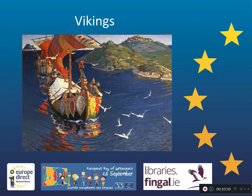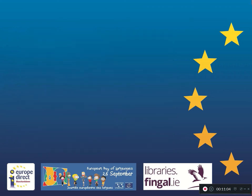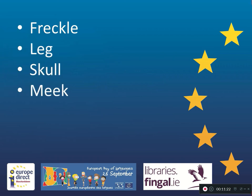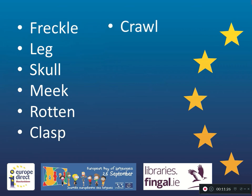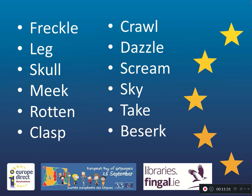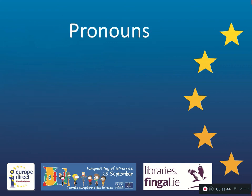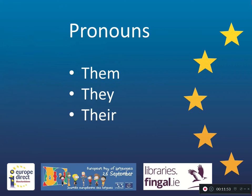Who were the next group of people to influence the English language? It was the Vikings, and they invaded Britain in the 700s and also came to Ireland. The language the Vikings spoke was also a Germanic language, and it's likely that the Vikings and the Anglo-Saxon inhabitants of England would have been able to understand each other to a certain extent. That said, they did give us some specific words: freckle, leg, skull, meek, rotten, clasp, crawl, dazzle, scream, sky, take and berserk — a berserker being a particularly ferocious type of Viking warrior. The Norse also gave us several of our pronouns such as them, they and their — again, very common words we use every day.